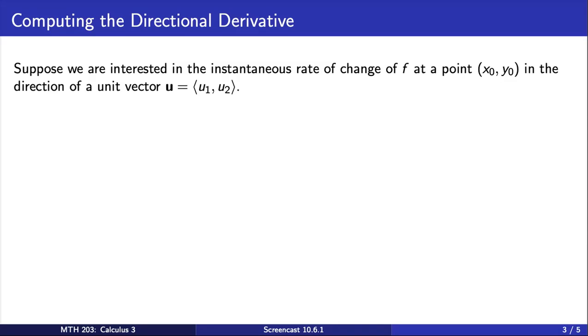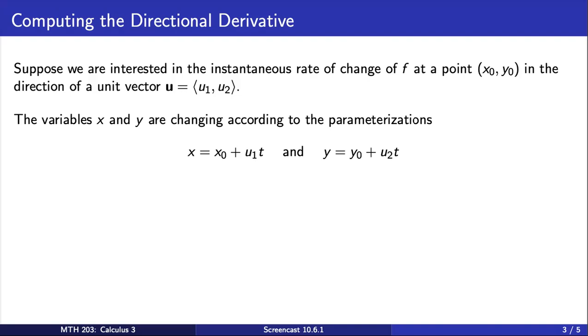Suppose we are interested in the instantaneous rate of change of f at a point (x_0, y_0) in the direction of a unit vector u. The variables x and y are changing according to these parameterizations, since we are changing by u_1 in the x direction and u_2 in the y direction.